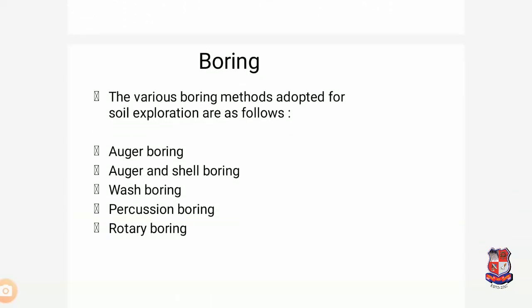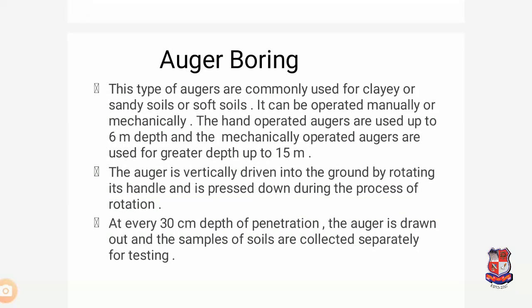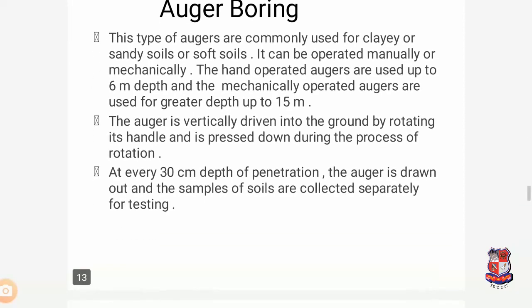Various types of borings are adopted for soil exploration: auger boring, auger and shell boring, wash boring, percussion boring, and rotary boring. Auger boring is mainly used for clay, sandy, or soft soils and can be operated manually or mechanically. Hand-operated augers are used up to a depth of 6 meters, while mechanically operated augers are used up to 15 meters. The auger is vertically driven into the ground by rotating it by hand or by pressing with rotation. At every 13 cm penetration, the auger is drawn out and soil samples are collected separately for testing.